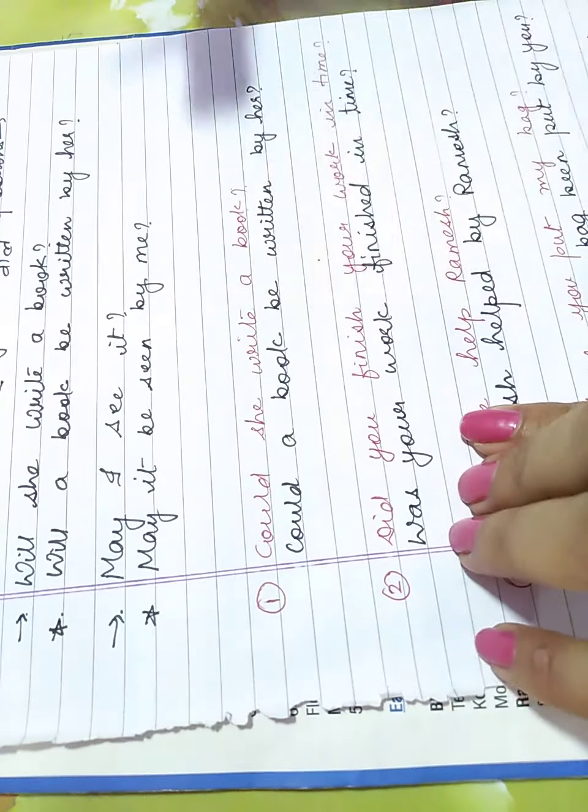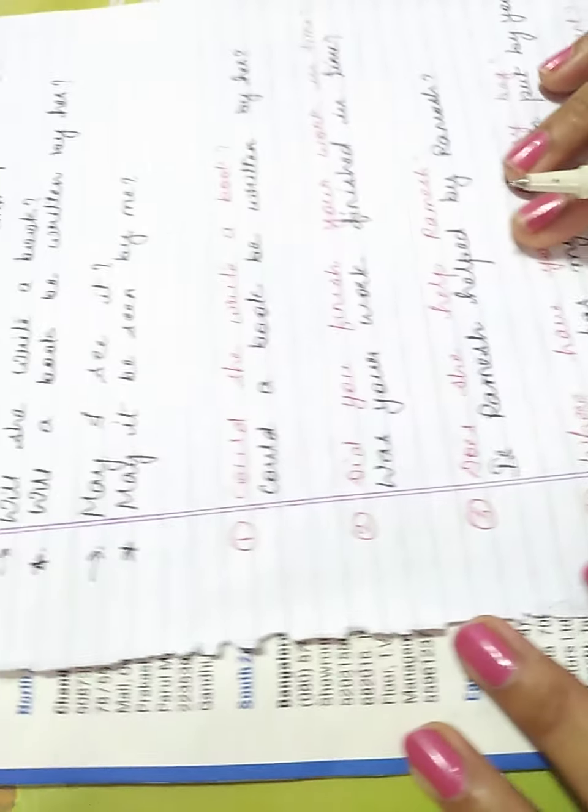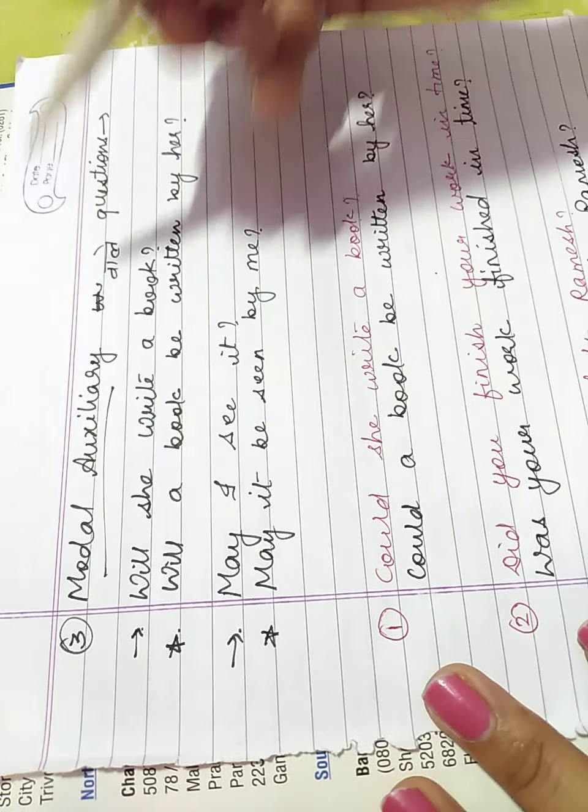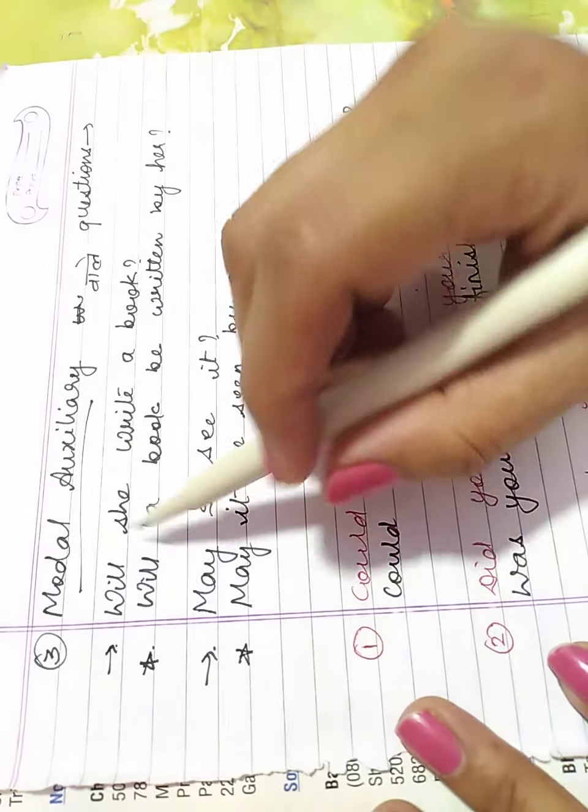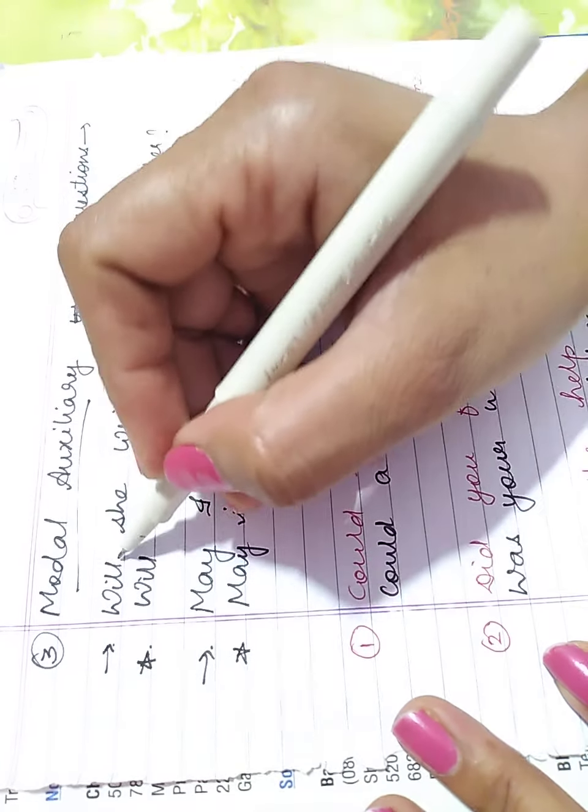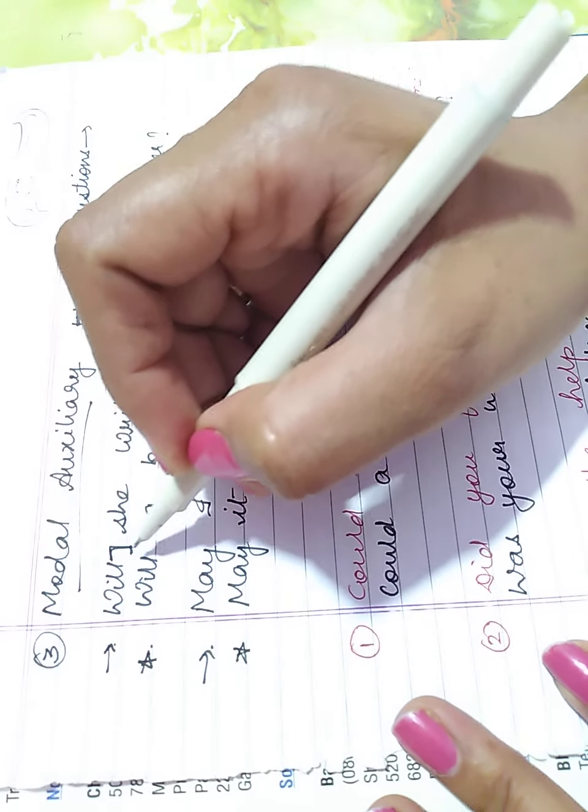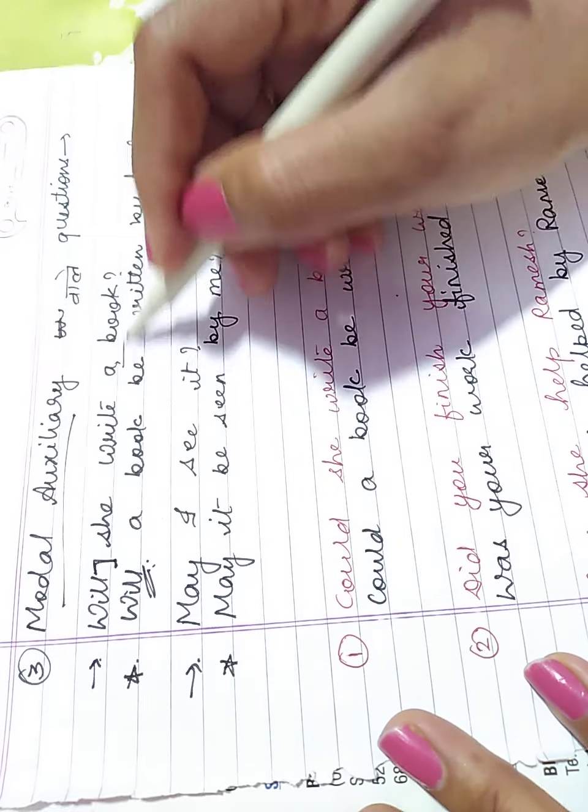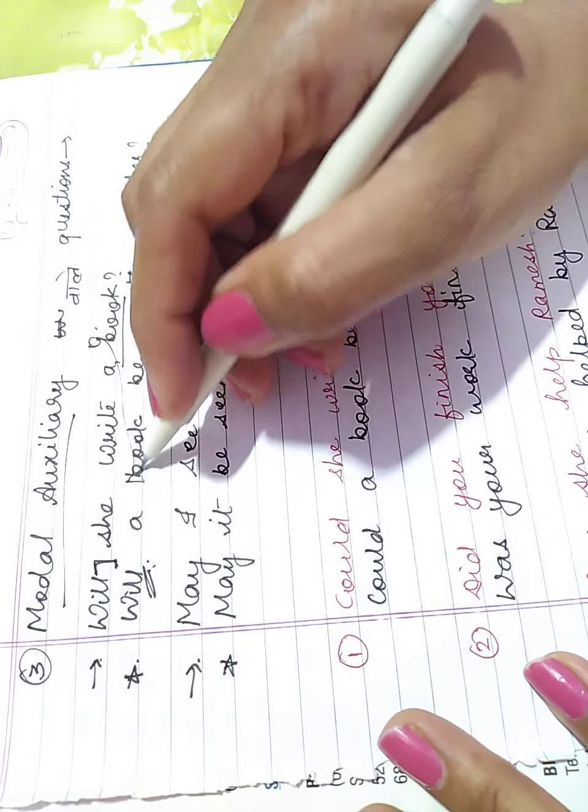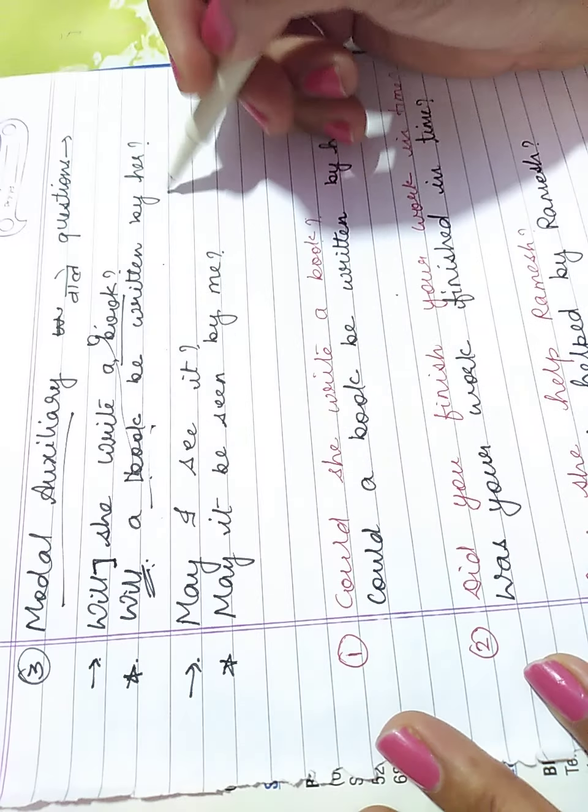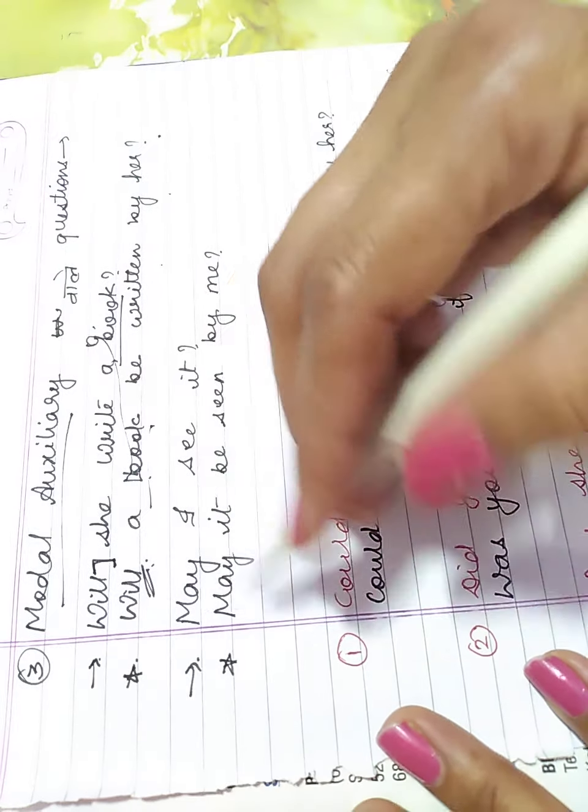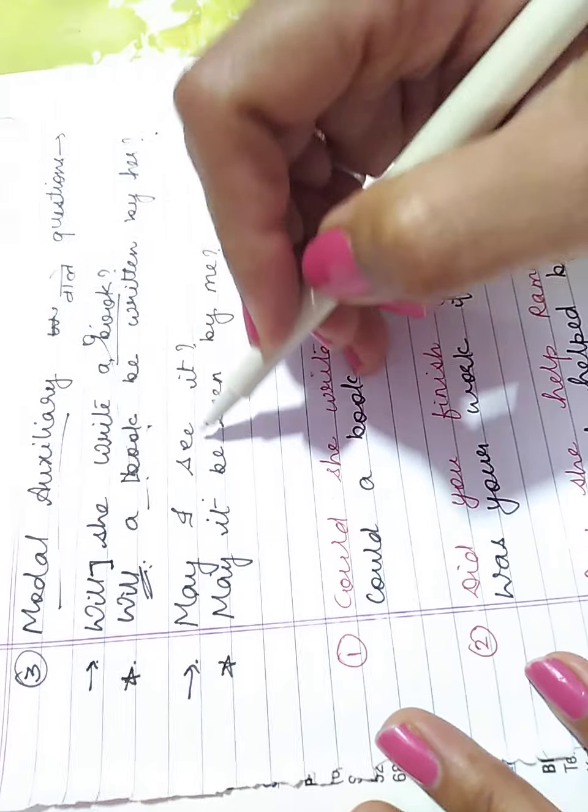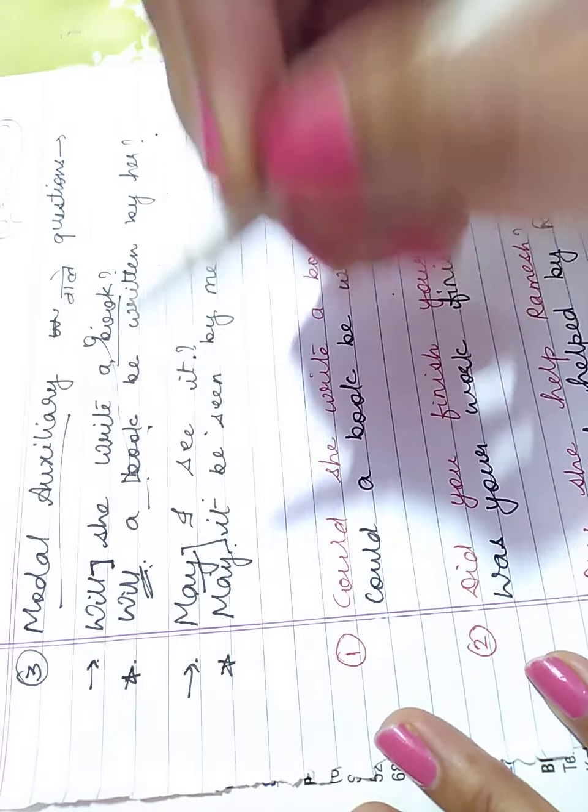Third type: shall, may, might, could, will. Will she write a book? Will as a question word, as it is: Will a book be written by her? May I see it? May as a question word: May it be seen by me?